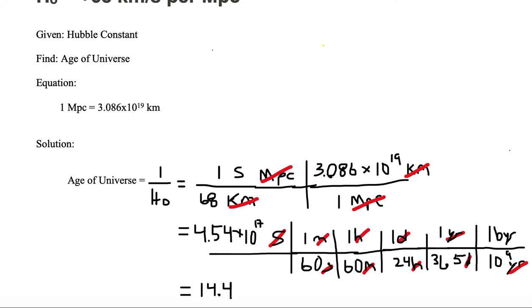So what we get here for our value is 14.4 billions of earth years, as our calculations. And that is how we would calculate the age of the universe given this particular Hubble constant.